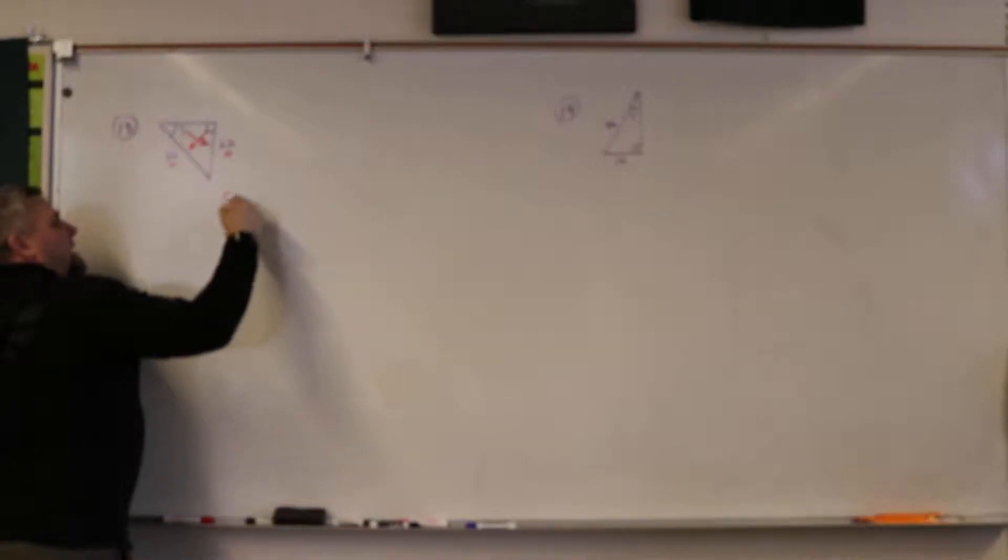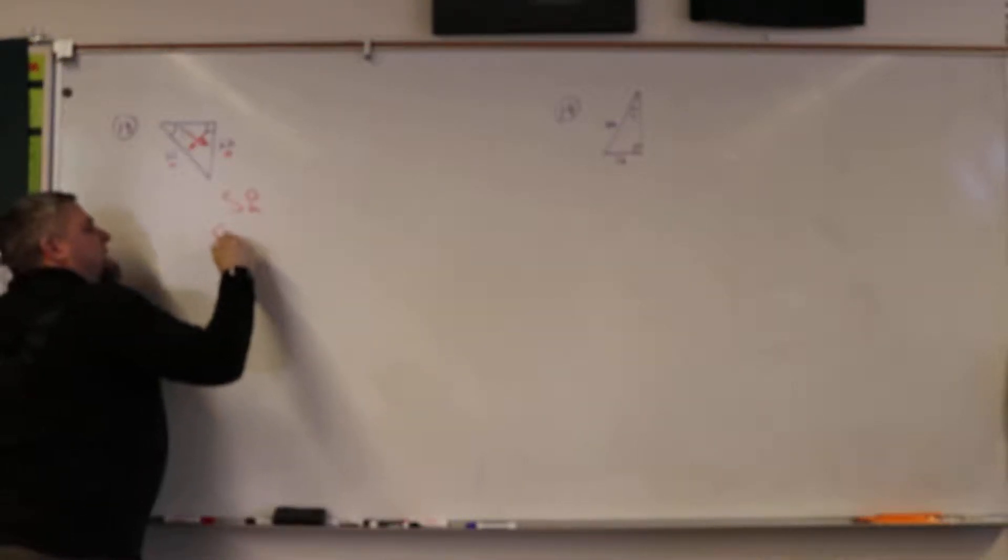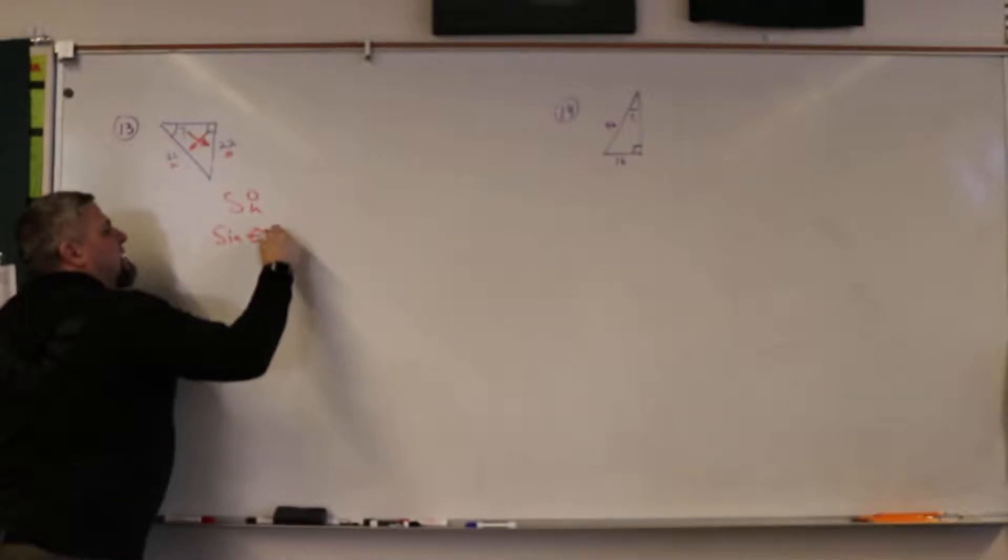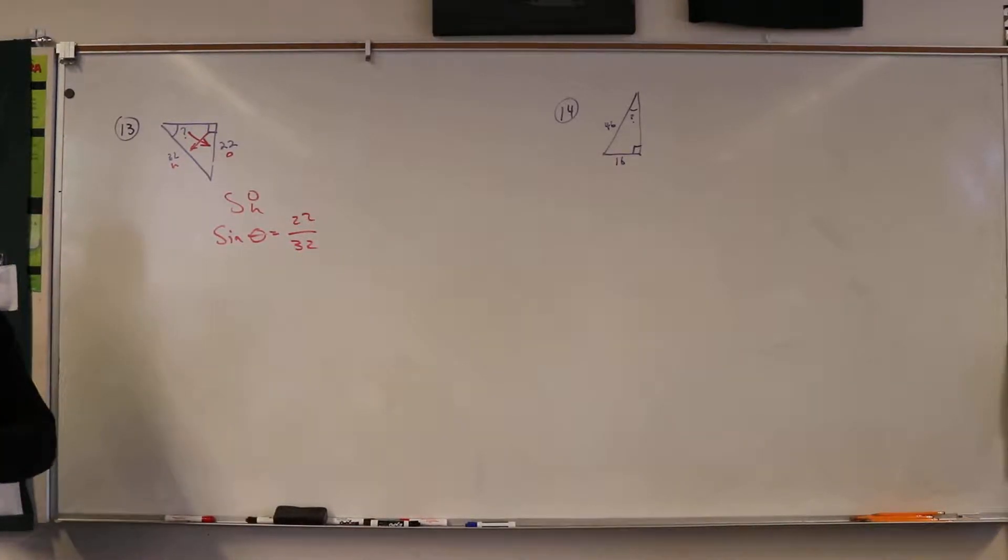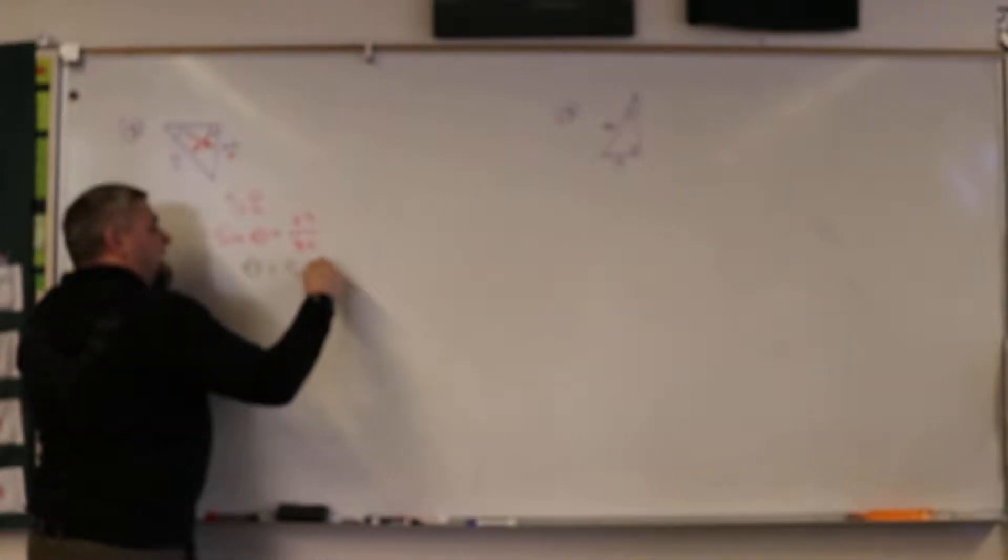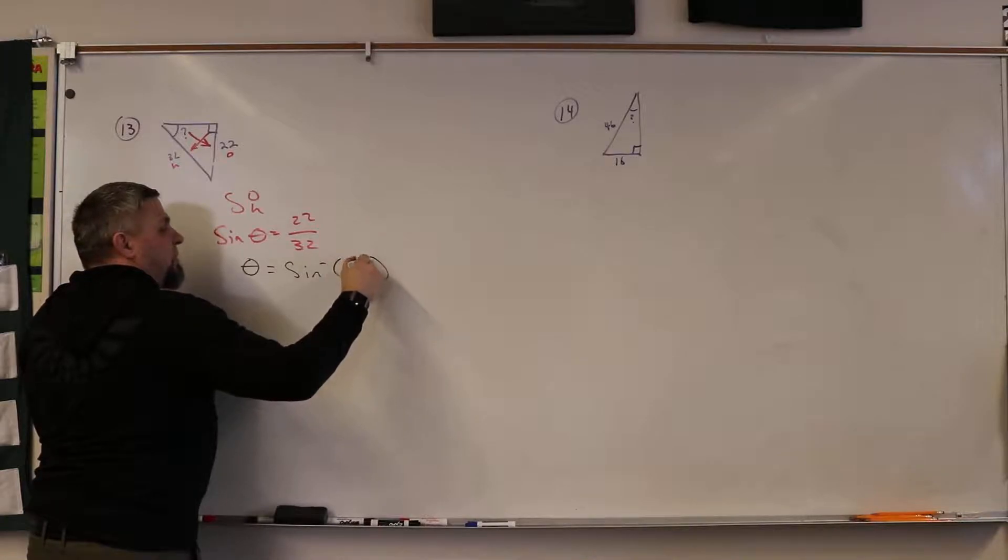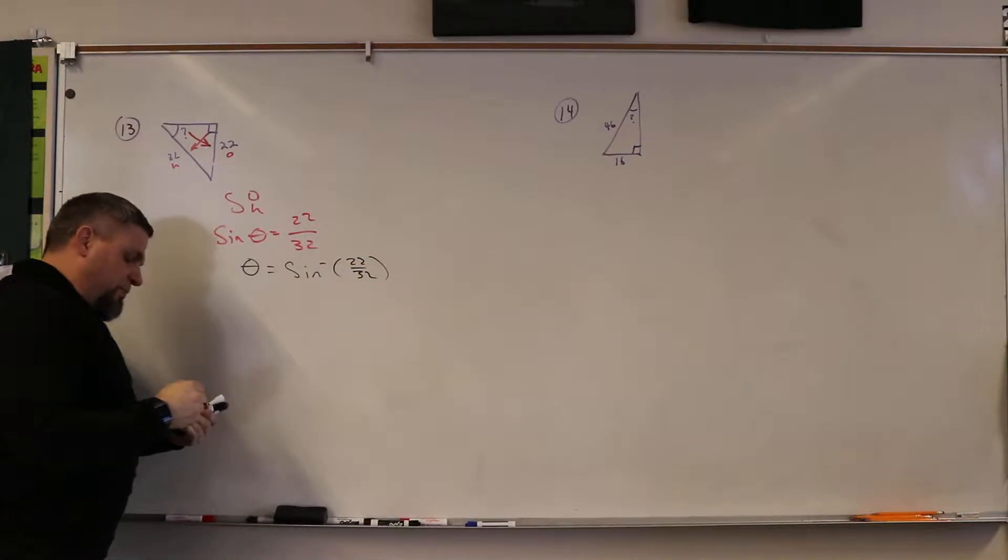So sine of theta equals opposite over hypotenuse, which is 22 over 32. Therefore, theta equals sine inverse of 22 over 32.